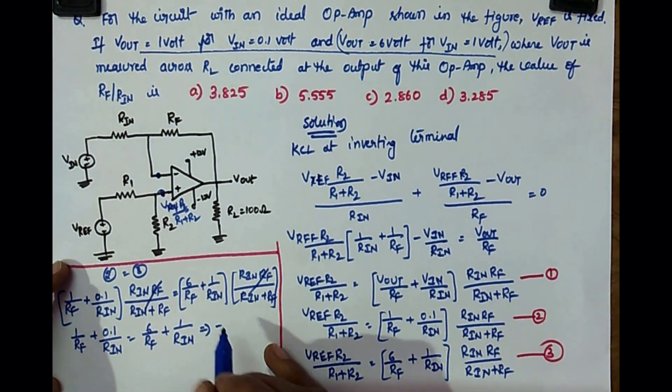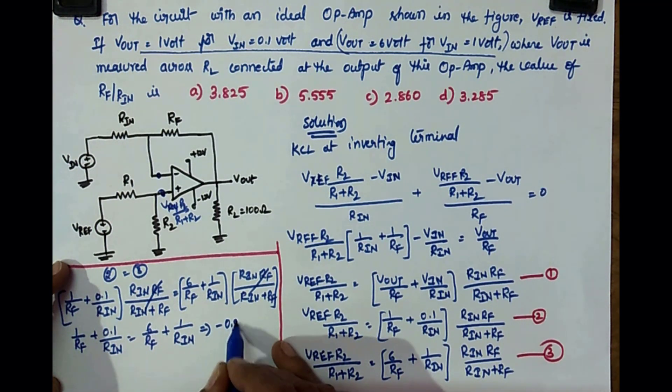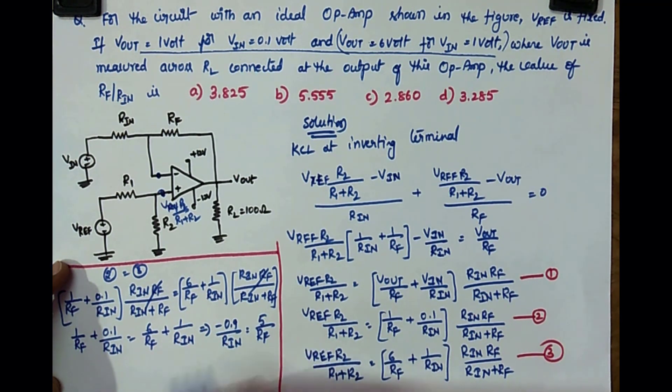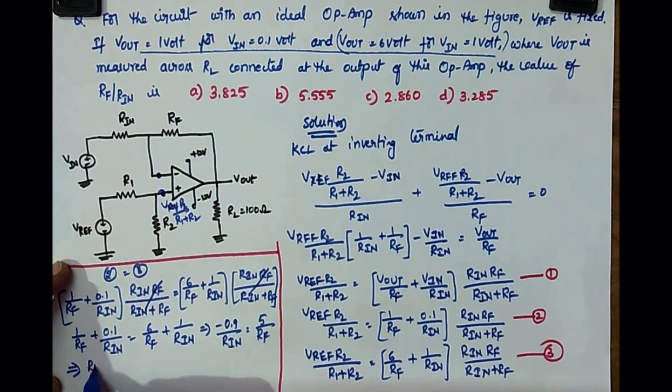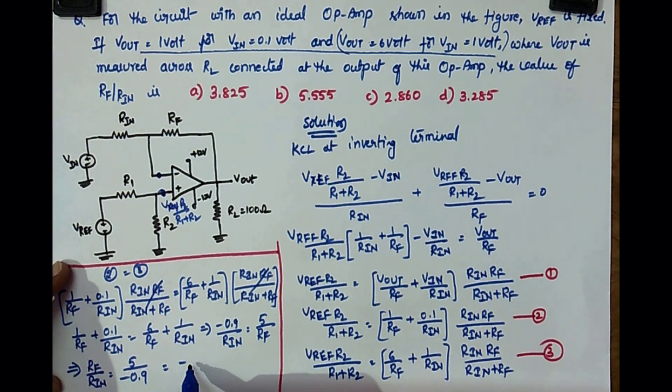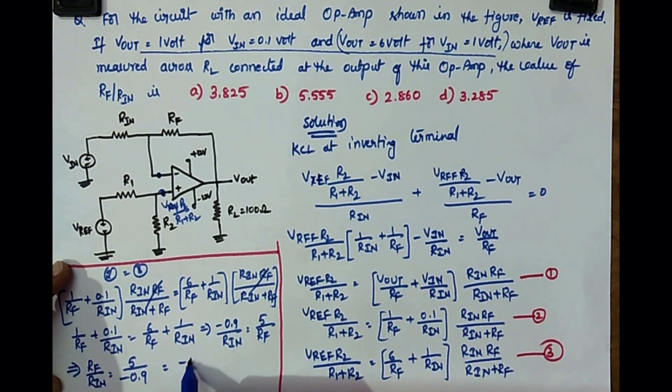Minus, yes, 1 by Rn keep this side, so minus 0.9 by Rn is equal to, take 1 by Rf here, so 5 by Rf. So what implies we required Rf by Rn. So Rf by Rn is equal to, yes, keep Rf here and this 5 by minus 0.9 is nothing but minus 5.55.